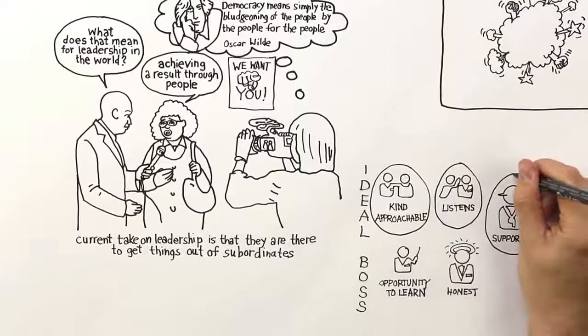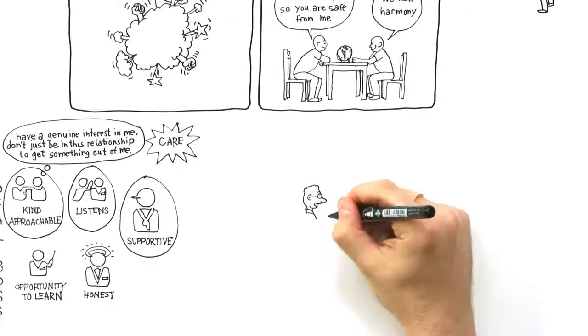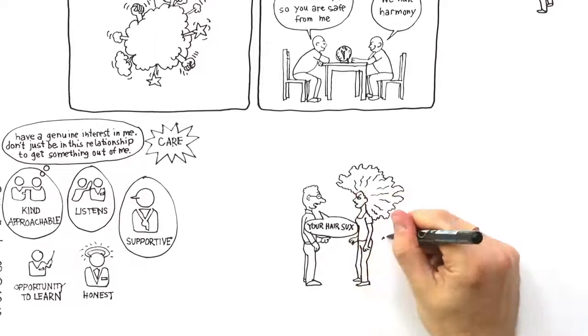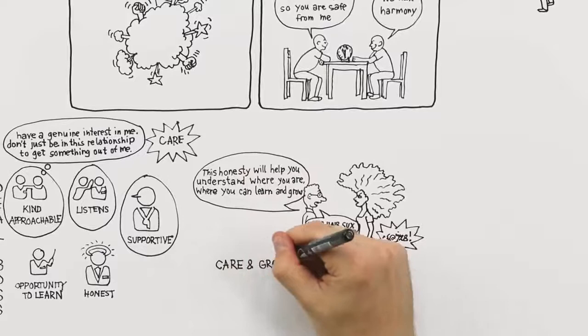The first is concerned with care. What the subordinate is actually saying to the boss is have a genuine interest in me, don't just be in this relationship to get something out of me, care about me. But then there's a harder theme. If you're looking for someone who's honest, they won't always be nice, sometimes they'll say things that are upsetting. The reason why you want the honesty is because it helps you to understand where you are and what you can learn and therefore how you can grow. So the two themes that come out of this ideal boss is caring and growth.